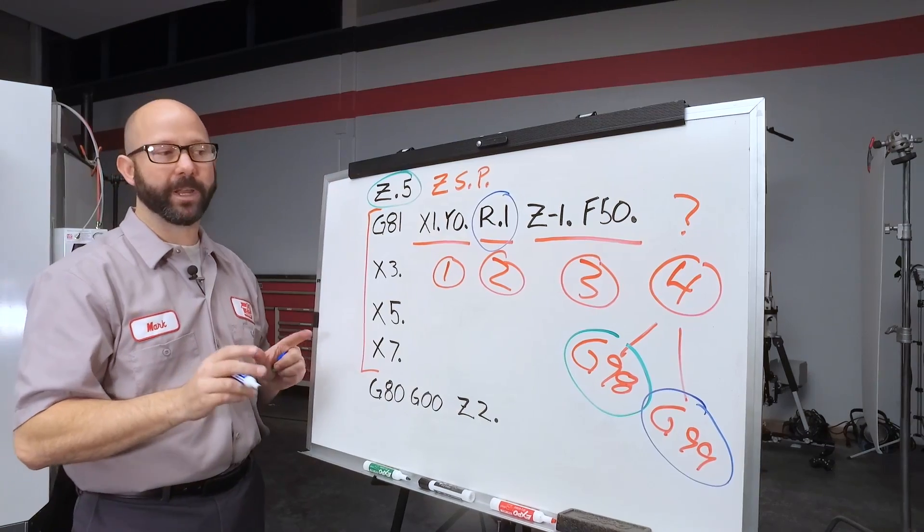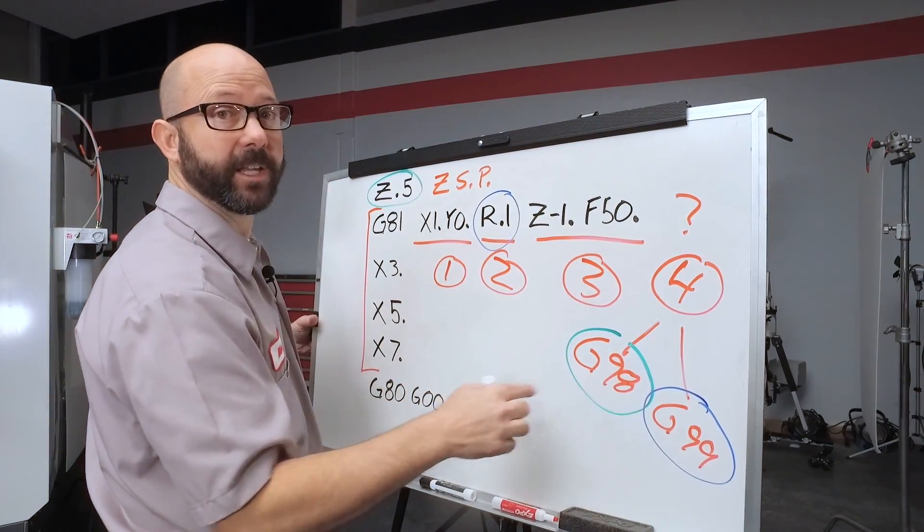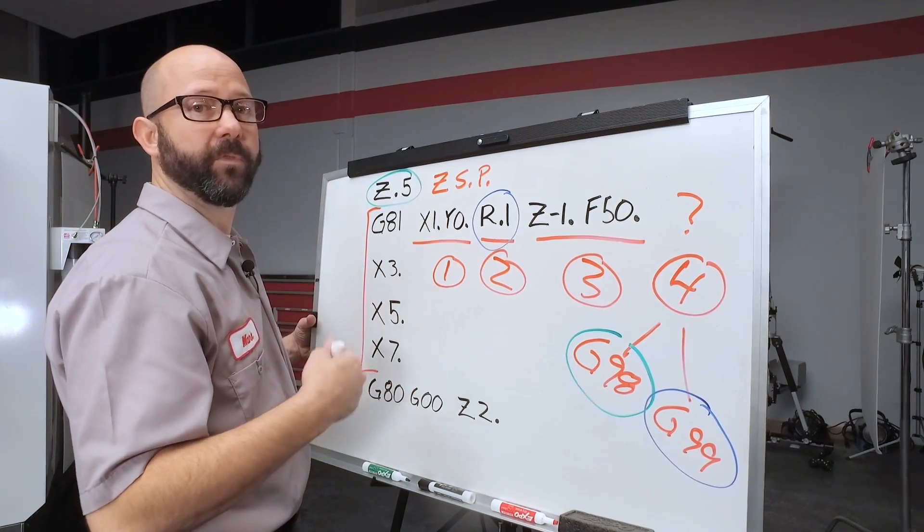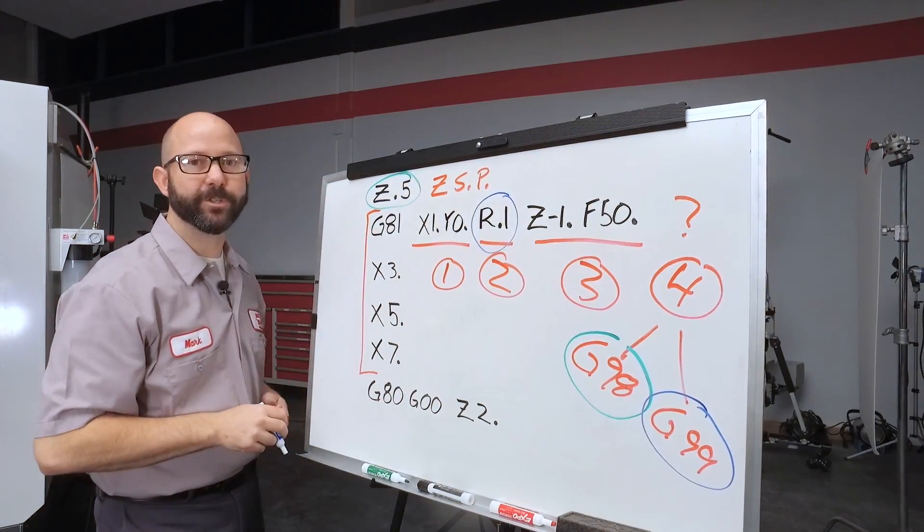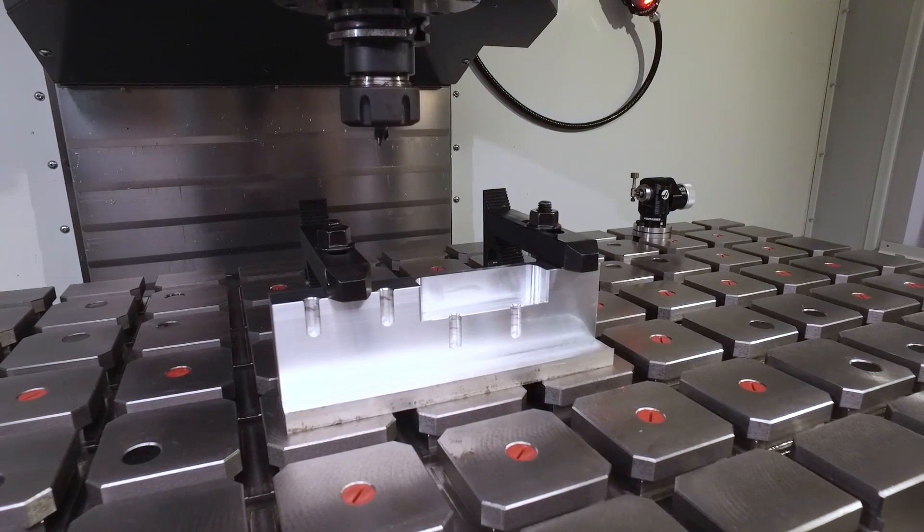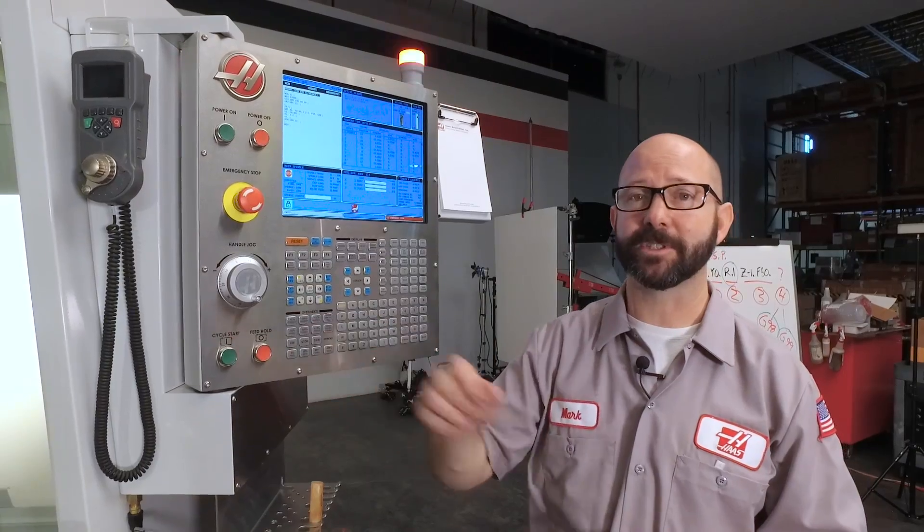Now, it's worth noting that G98 is used by the control by default. So even though we haven't commanded a G98, we're still using it. Well, now that we've covered the basics of our canned cycles, we can come back and address those clamps.